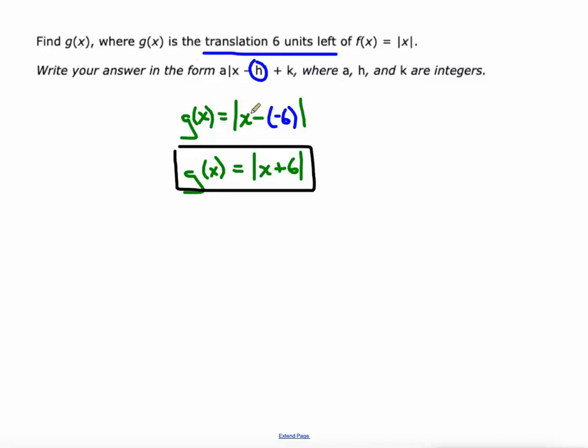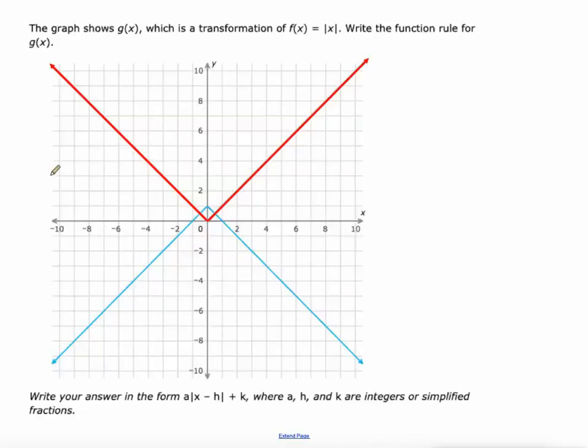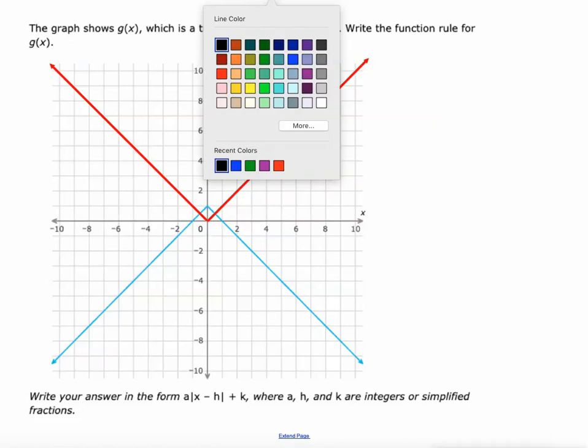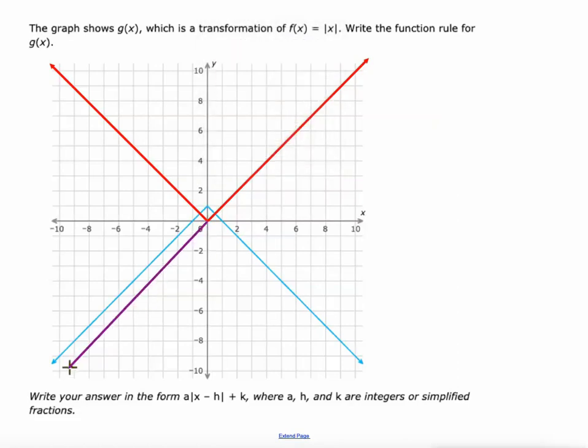Here's another graph and again I already put the parent function in there in red. We're going to make an equation for the blue one. Let's think about this purple one. What's been done to the red function to create that one? It's a reflection. That a value right there controls reflections. We just have to make that a value negative.